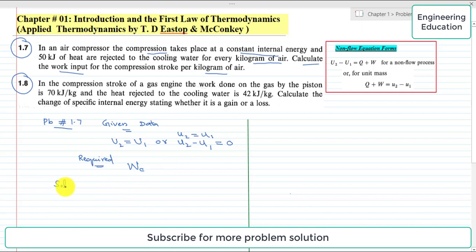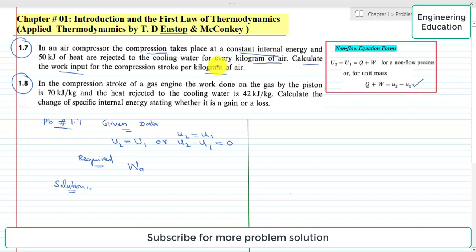The solution is straightforward using the non-flow equation. There are two forms: U2 minus U1 equals Q plus W for a system, and for unit mass, q plus w equals u2 minus u1. Since this problem deals with unit mass, we use the second form: q plus w equals u2 minus u1.